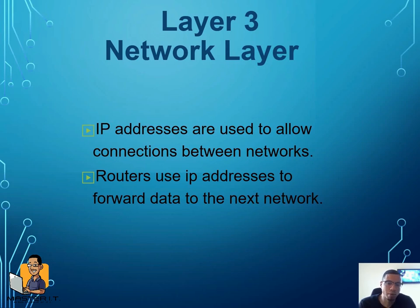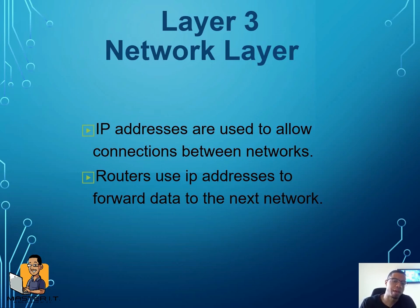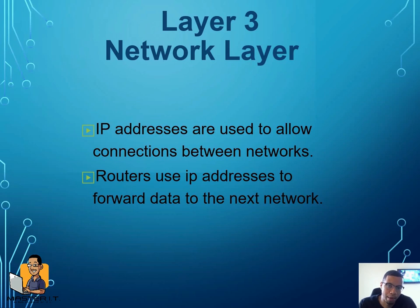Layer three is the network layer, responsible for IP addressing. Routers work at this layer and use IP addresses to forward information. A router looks at the information, determines what IP address it needs to go to next, and forwards it accordingly.